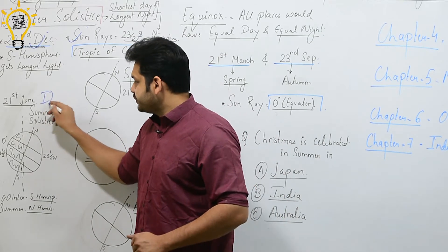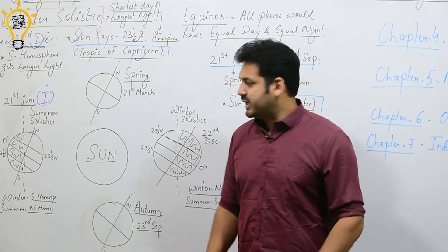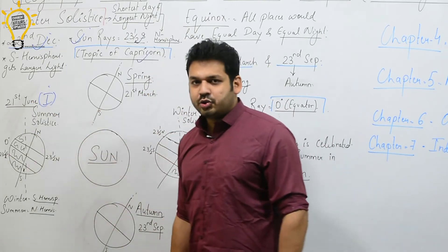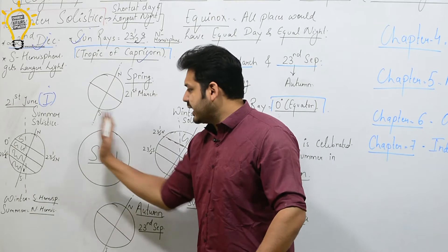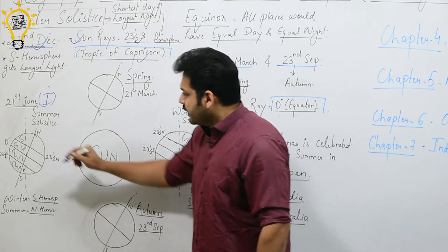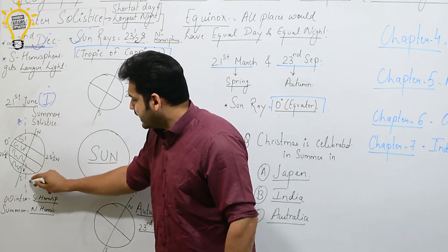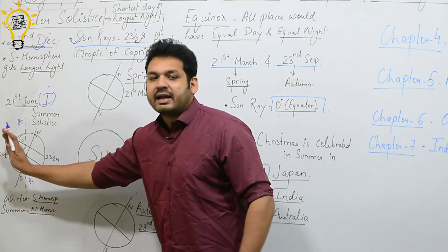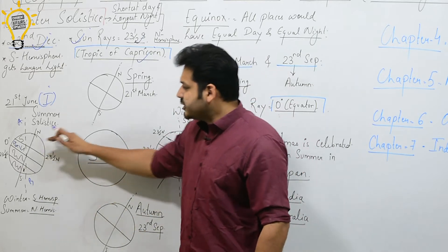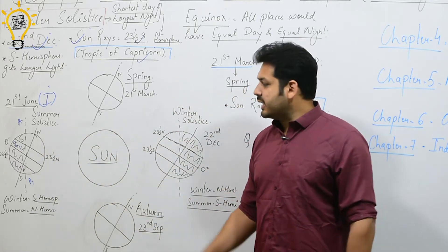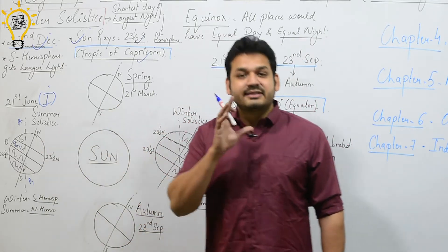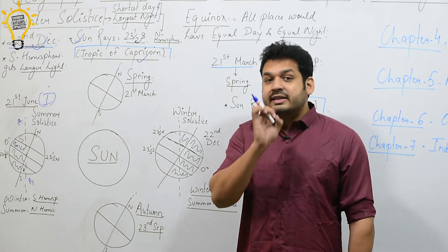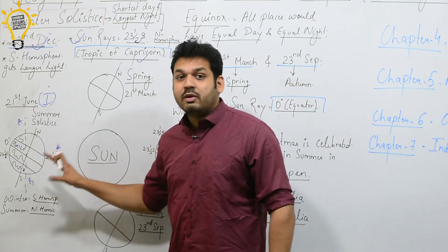Position 1, which I already discussed earlier, is the summer solstice — that is 21st June. You can see here the Northern Hemisphere is tilted toward the sun. This is the circle of illumination, that is AB. This is the darker part and this is the light side. The Northern Hemisphere is tilted toward the sun, so this is summer in the Northern Hemisphere and winter in the Southern Hemisphere.